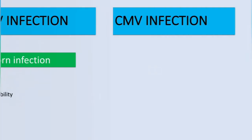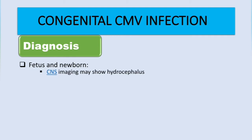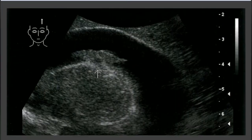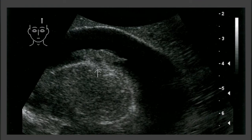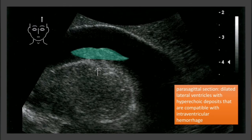For diagnosis in the fetus and newborn, we can do CNS imaging, which will show hydrocephalus, periventricular calcifications, and intraventricular hemorrhage. Here is an ultrasound image — a parasagittal section — showing dilated lateral ventricles with hyperechoic deposits compatible with intraventricular hemorrhage.